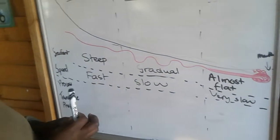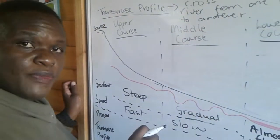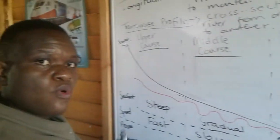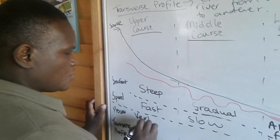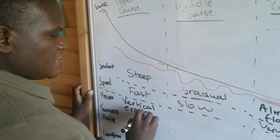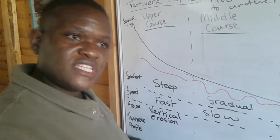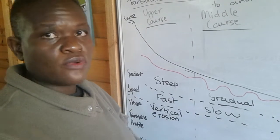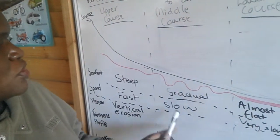In terms of processes: if rivers are flowing very fast in the upper course, which process should we expect? We are going to expect vertical erosion — also called downward erosion — because the river is moving downwards and eroding downwards.